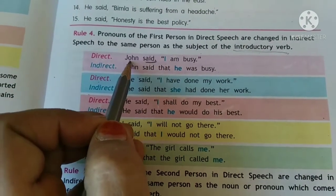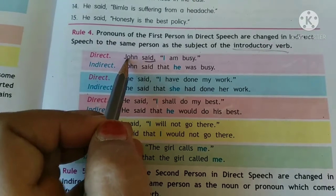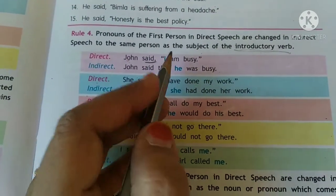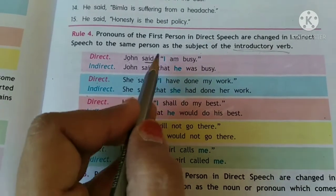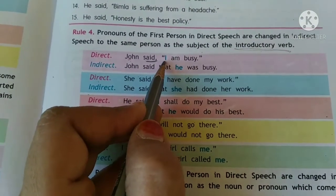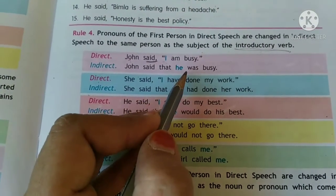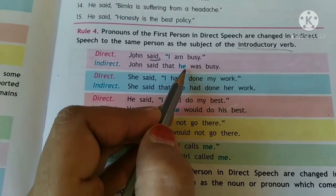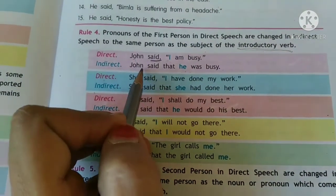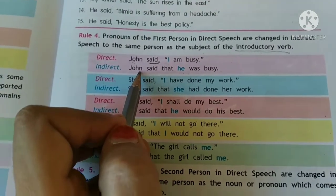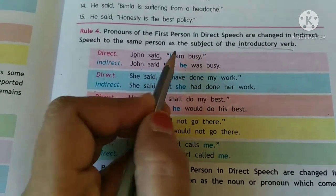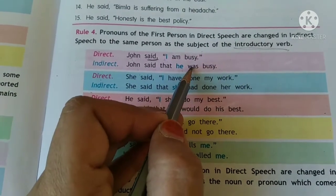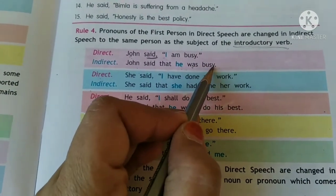So who is this 'I'? It is the subject of the introductory verb, that is John. So when we change it into the indirect, this first person 'I' will change to 'he', and this 'he' is John. So in indirect we say: John said that he — 'am' is simple present, it will become simple past — was busy.